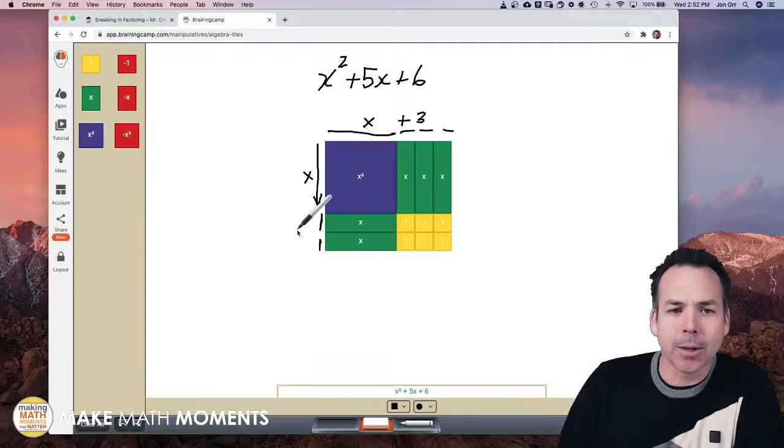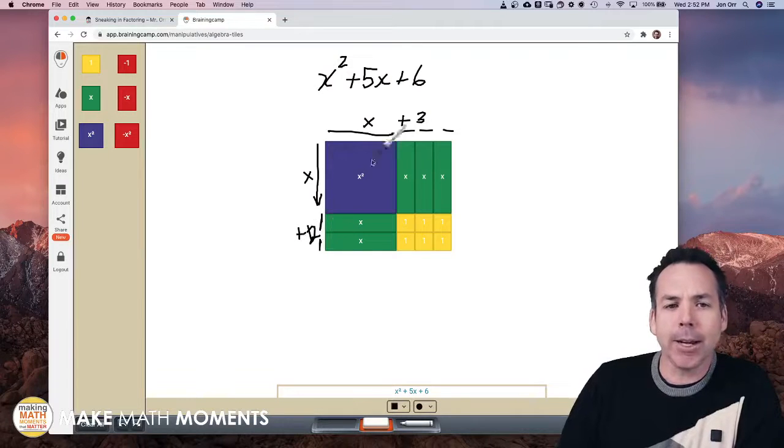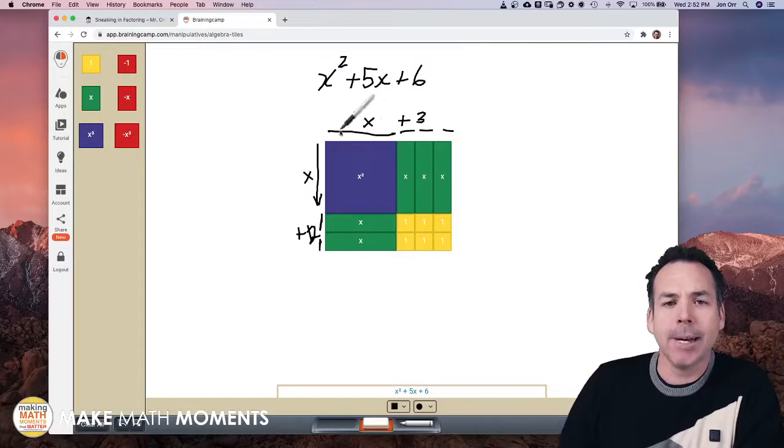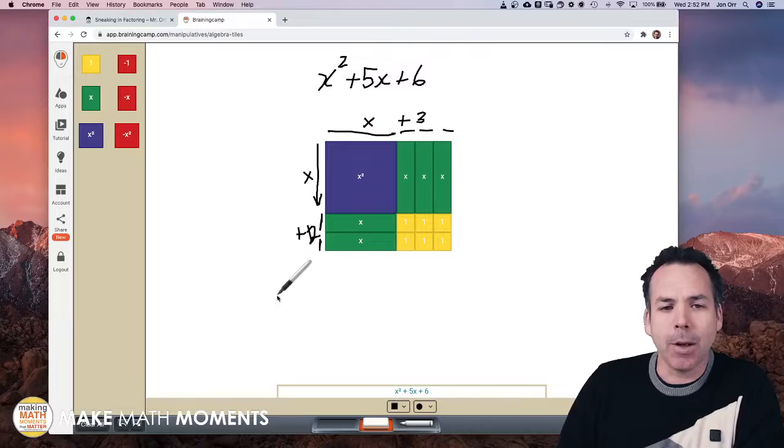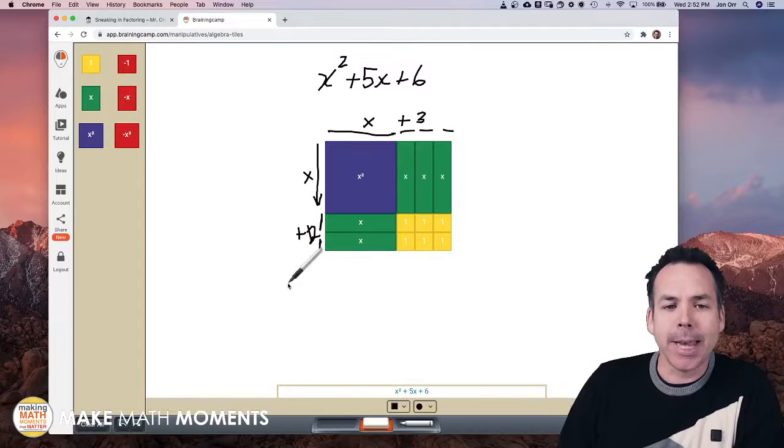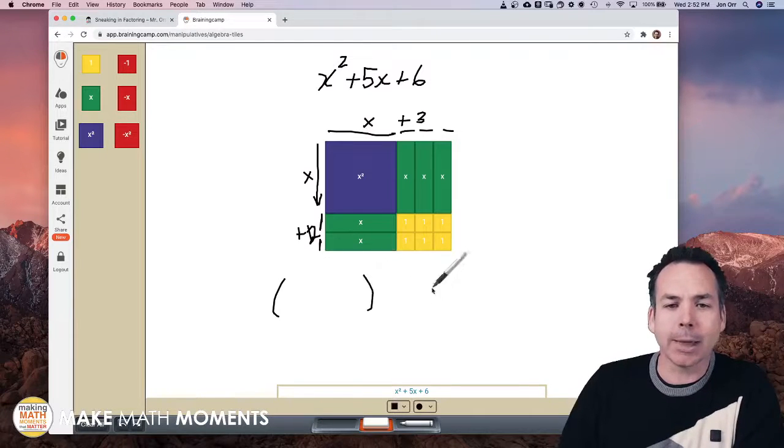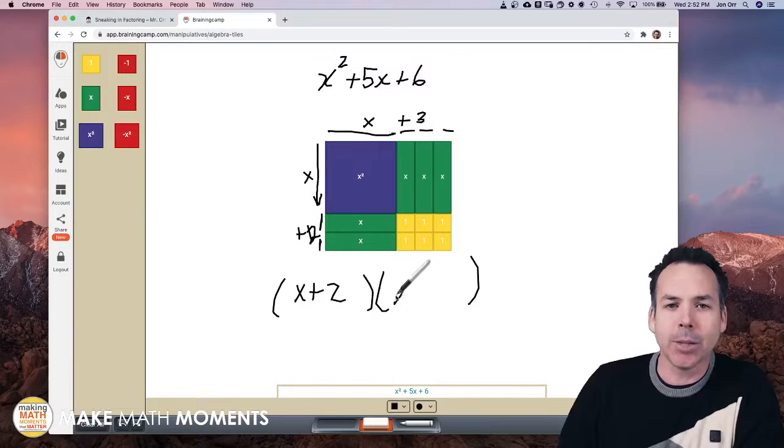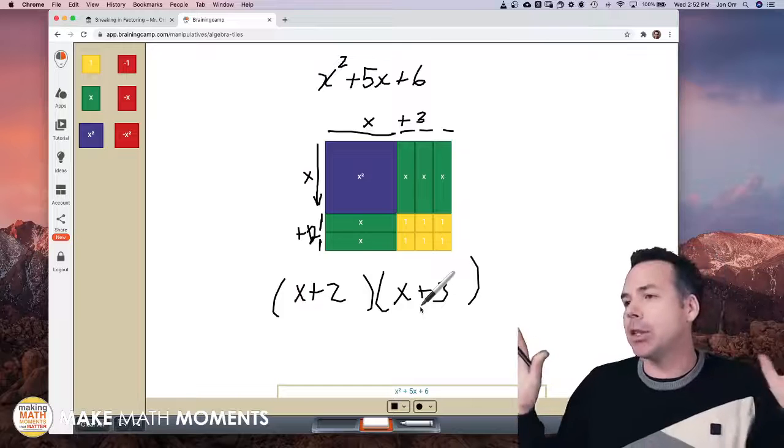So this whole area is x squared plus five x plus six covers an area but its length is x plus three and its width is x plus two. All of a sudden you could say you know what, the area written length and width wise, then this area would be an x plus two times an x plus three. That's it, that's all you have to say.